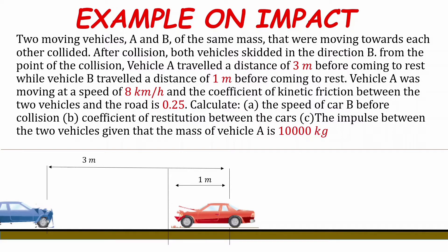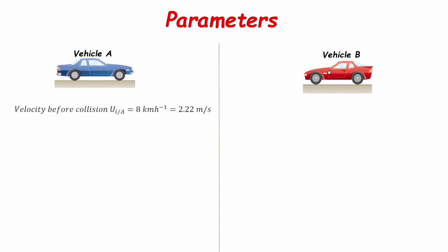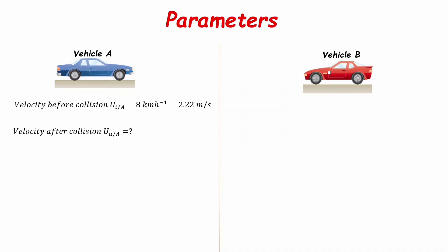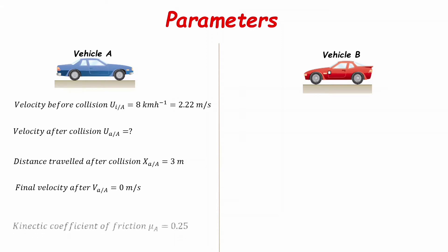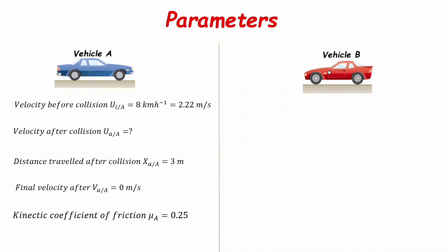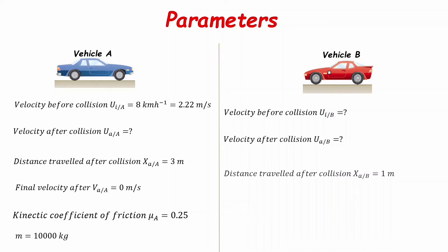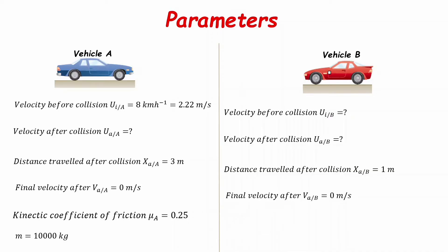Other variables were given, such as the initial velocity with which vehicle A was moving at 8 km per hour, and their masses were also given. For vehicle A, we have the initial velocity before collision — that's U_iA — we're given the distance it traveled backwards after the collision, which is 3 meters, and the final velocity of vehicle A is zero because it came to rest. The coefficient of kinetic friction is 0.25 and the mass of vehicle A is 10 kg. Likewise for vehicle B, we're given the distance traveled after the collision, which is 1 meter, the final velocity is zero, and the kinetic coefficient of friction is 0.25 as well.